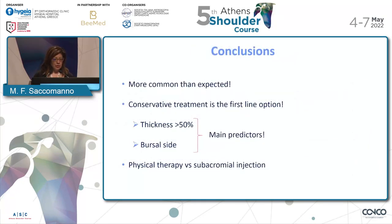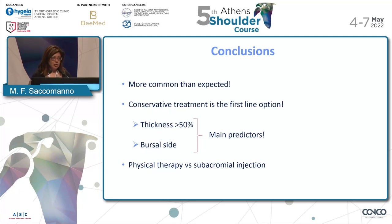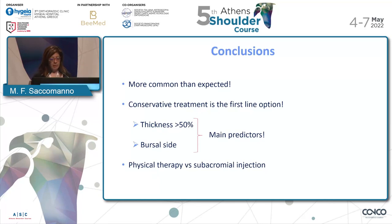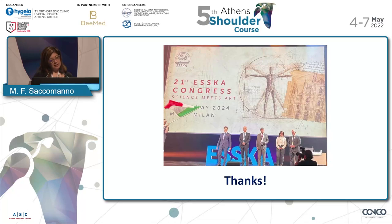In conclusion, partial thickness tears are probably more common than expected, particularly intratendinous ones. Conservative treatment is the first line of management. Keep an eye on patients with a bursal-sided or high-grade partial thickness tear, as conservative treatment may fail in those cases. But you have time — you don't need to rush to the operative field, as results do not change even if surgery is delayed. Physical therapy and subacromial injection are the mainstay of treatment. In my clinical practice, I combine both: physical therapy and hyaluronic acid injection, because it avoids corticosteroid side effects while having lower cost than PRP. Thank you — please join us in Milan for the next ESSKA Congress in 2024.